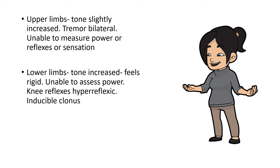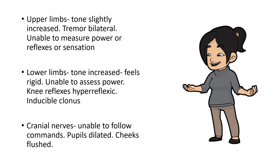Power is difficult to assess given poor cooperation. However, you manage to get knee reflexes and they are hyperreflexive — very brisk. There is also inducible clonus on both sides. On cranial nerve examination, which is difficult to perform, the pupils are again noted to be dilated, and those cheeks are flushed.